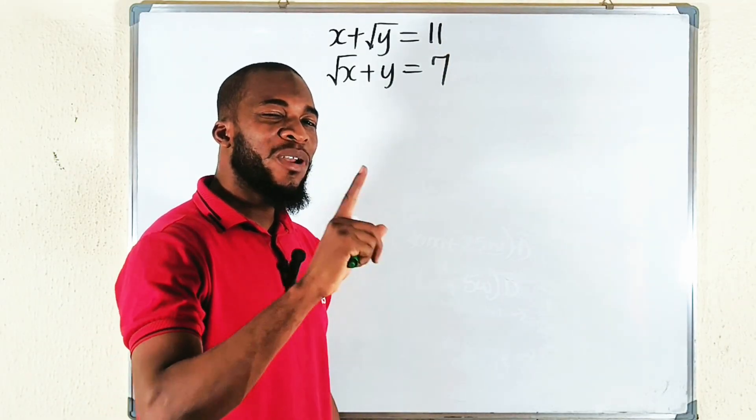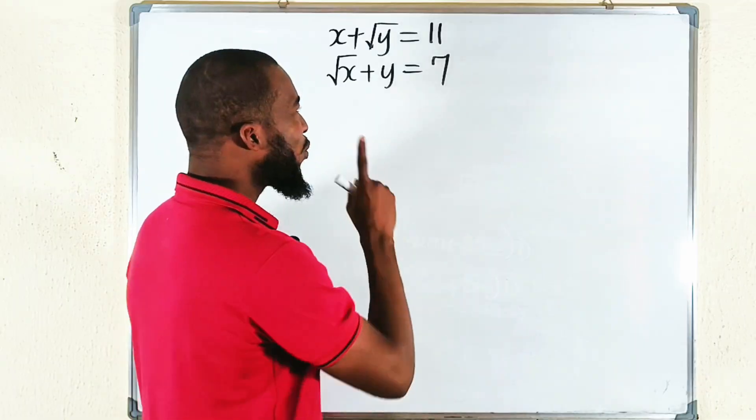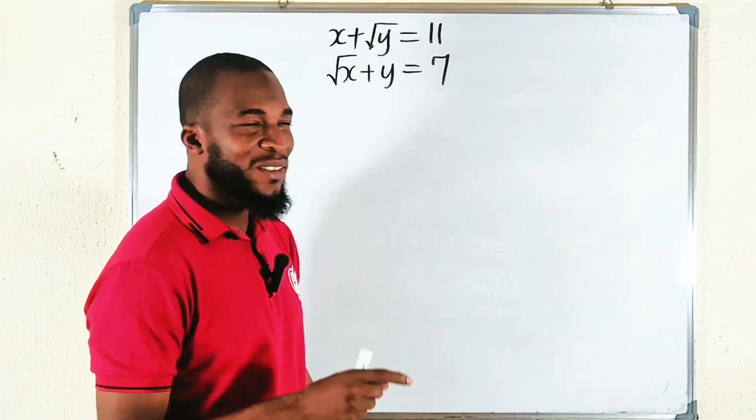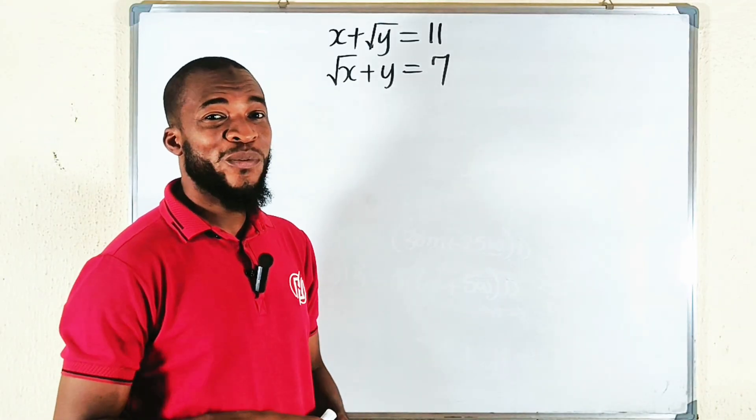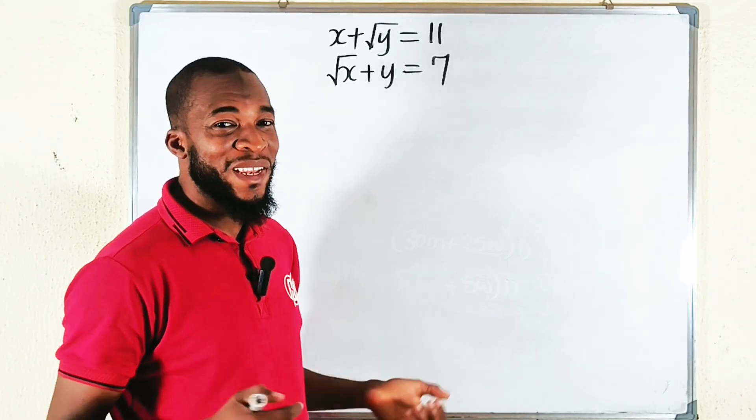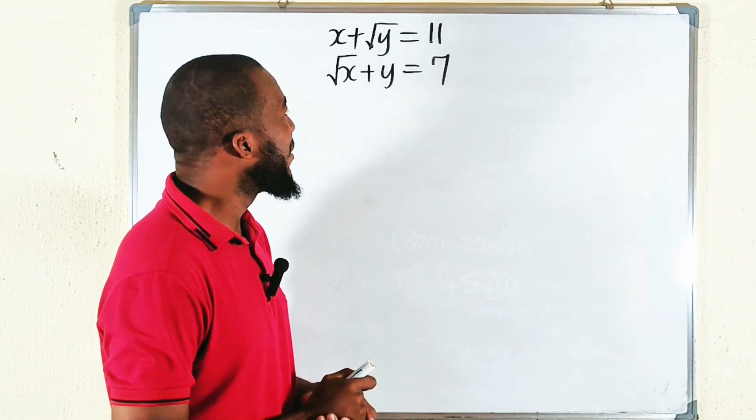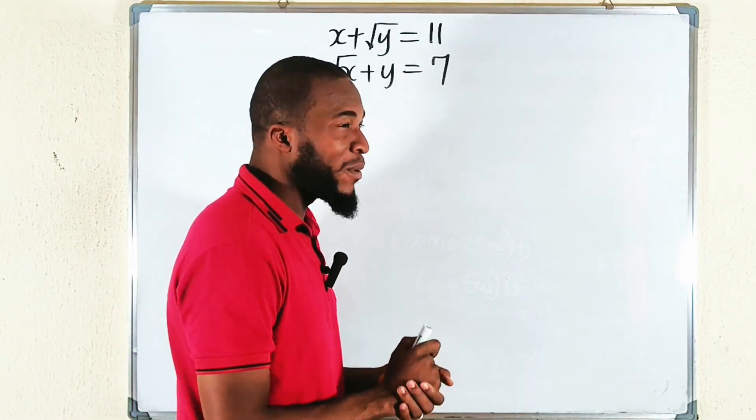And lastly, don't even try squaring on both sides. You will end up complicating the whole system.